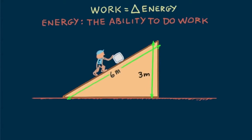Consider the work done when a block of ice is pushed up a ramp. For simplicity, we'll assume no friction between the block and the ramp. Our guy pushes with a force F a distance D and gets the block to the top. The weight of the block is 400 Newtons, but since it's a ramp, he finds a force of 200 Newtons does the job. So he pushes the block a distance of 6 meters to the top of the ramp.